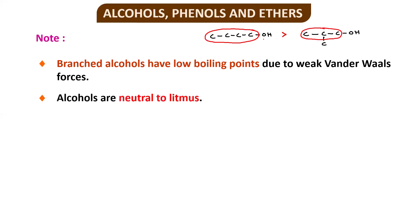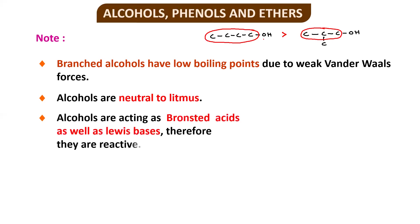Alcohols are neutral to litmus, meaning they are neither acidic nor basic towards litmus paper. However, alcohols act as Brønsted acids as well as Lewis bases, which makes them reactive.